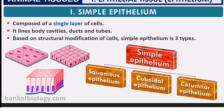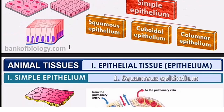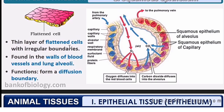Single layer epithelial tissue has only one layer, while compound epithelial tissue has multiple layers. The cells cover cavities, ducts, and tubes. Based on structural modifications, there are three types: squamous epithelial tissue which is flat, cuboidal epithelial tissue which is cube-shaped, and columnar epithelial tissue which is column-shaped.